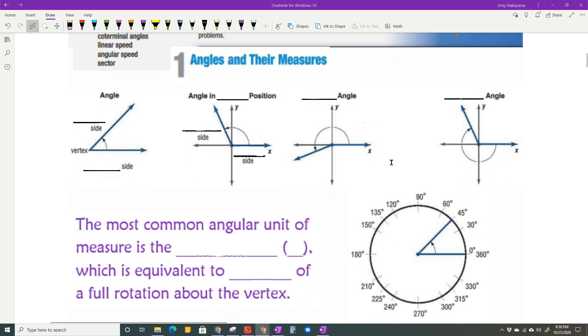So to refresh your memory, in geometry you learned that an angle was two rays with a common endpoint. That endpoint is called the vertex, and every angle has an initial side and a terminal side. Now, that angle is said to be in standard position if the initial side is the positive x-axis, terminal side can be anywhere.